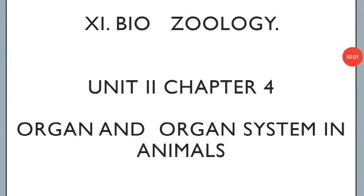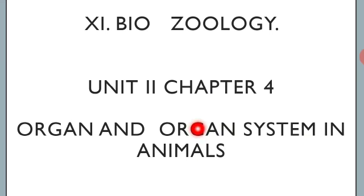Good morning students. Today we are going to see 11th Biology Unit 2 Chapter 4: Organ and Organ System in Animals. The basic tissues are organized to form organs, which are associated to form organ systems. In multicellular organisms, such an organization is essential for more efficient and better coordination of the activities of millions of cells.